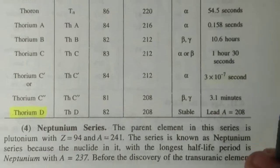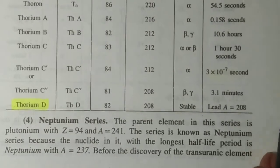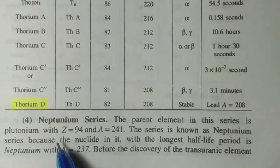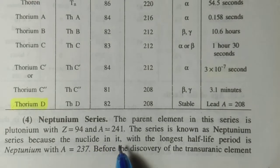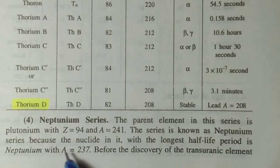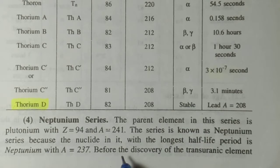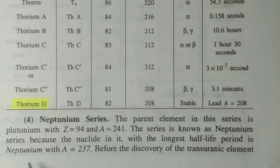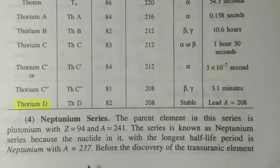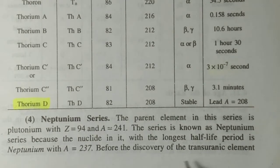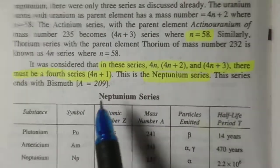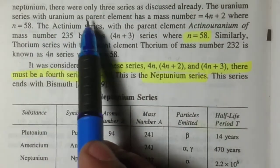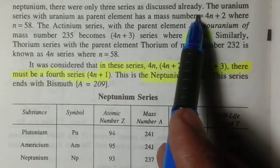Now the next one is neptunian series. The parent element in this series is plutonium with Z equal to 94 and mass number 241. The series is known as neptunian series because the nuclide in it with the longest half-life period is neptunium. Before the discovery of transuranic elements, there were only three series as already discussed.